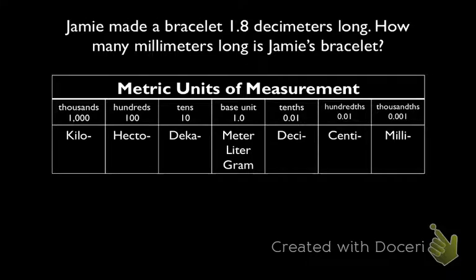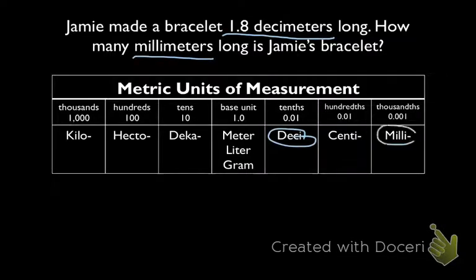Okay, now let's solve that. So we see that a bracelet is 1.8 decimeters long. We're changing it to millimeters. So here we are, decimeters and millimeters. Let's see, we know that every unit is 10 times bigger or smaller than the unit before it.